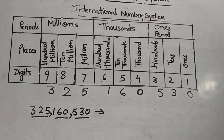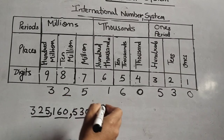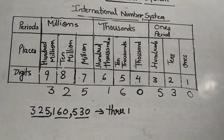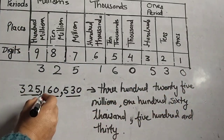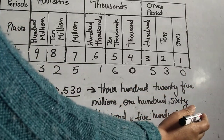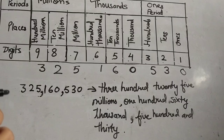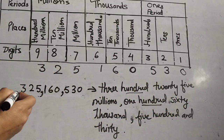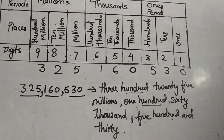We read it as: three hundred twenty-five million, three hundred and sixty thousand, five hundred and thirty. Children, don't be confused about why 'hundred' appears in all the periods — it is because three digits are in all the periods in the international system, which is why each period includes a hundreds place.